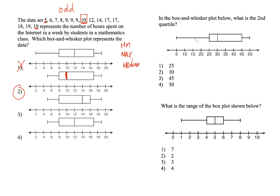They could also ask simple questions. In this one it says: in the box and whisker plot below, what is the second quartile? We know the minimum value, Q1, Q2 which is the median, Q3, and the max. The second quartile is your Q2, which is your median, and that is at 30. That's your answer.